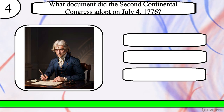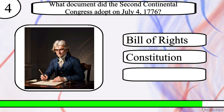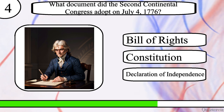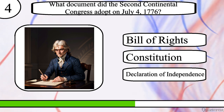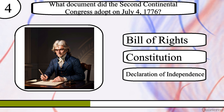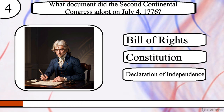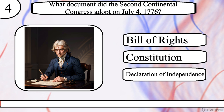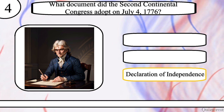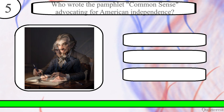Question 4. What document did the Second Continental Congress adopt on July 4th, 1776? Bill of Rights, Constitution, or Declaration of Independence? The correct answer is Declaration of Independence.